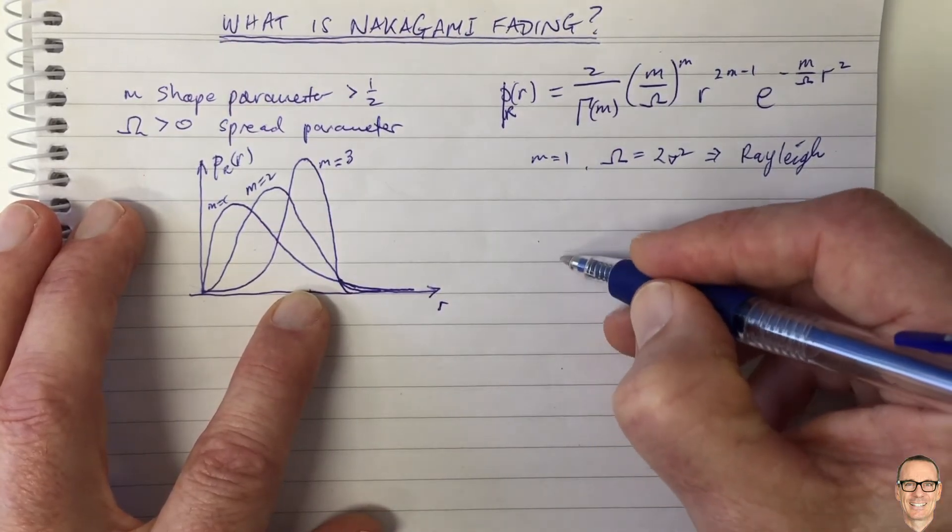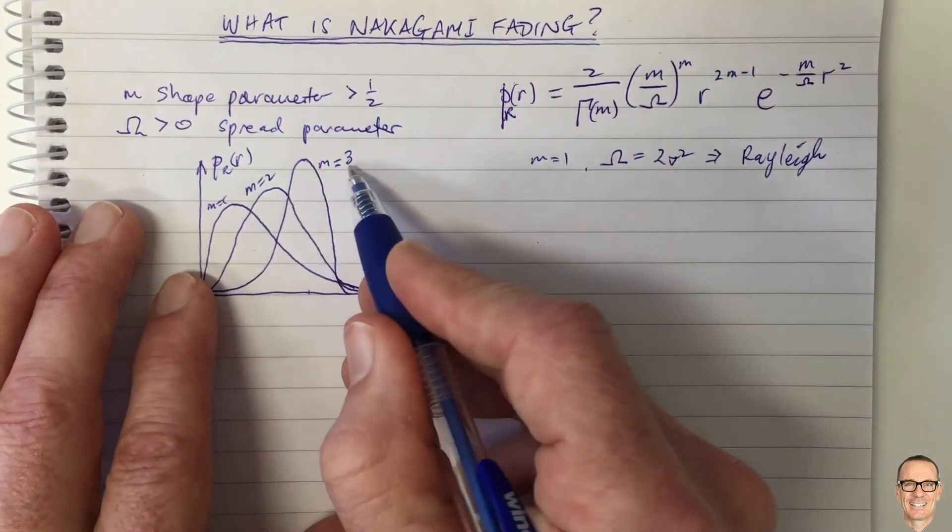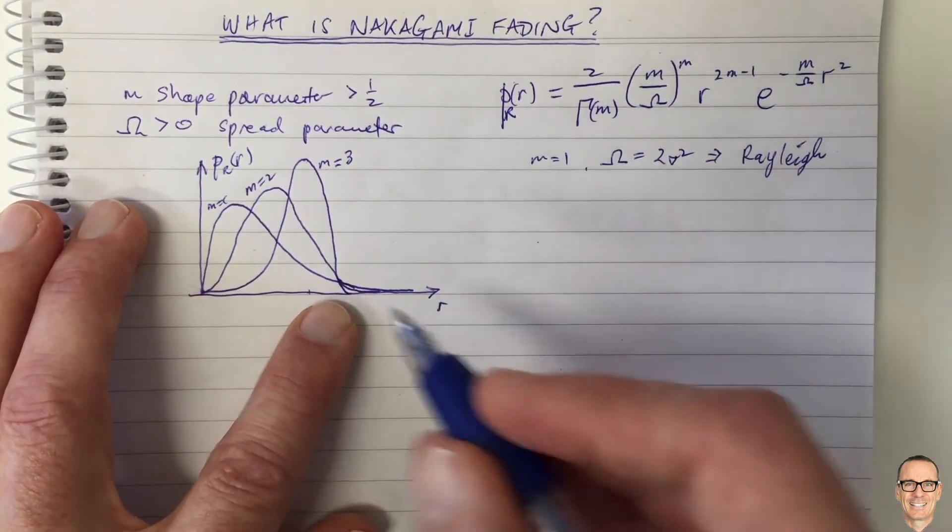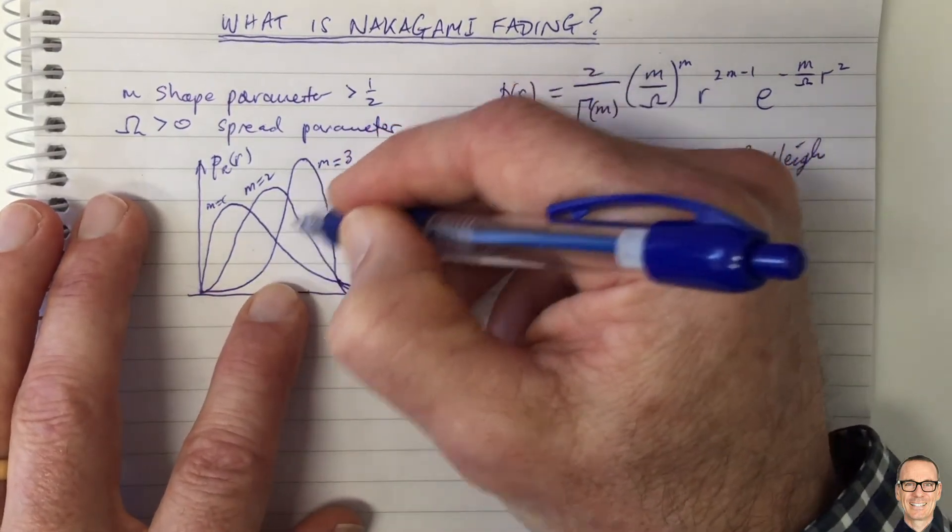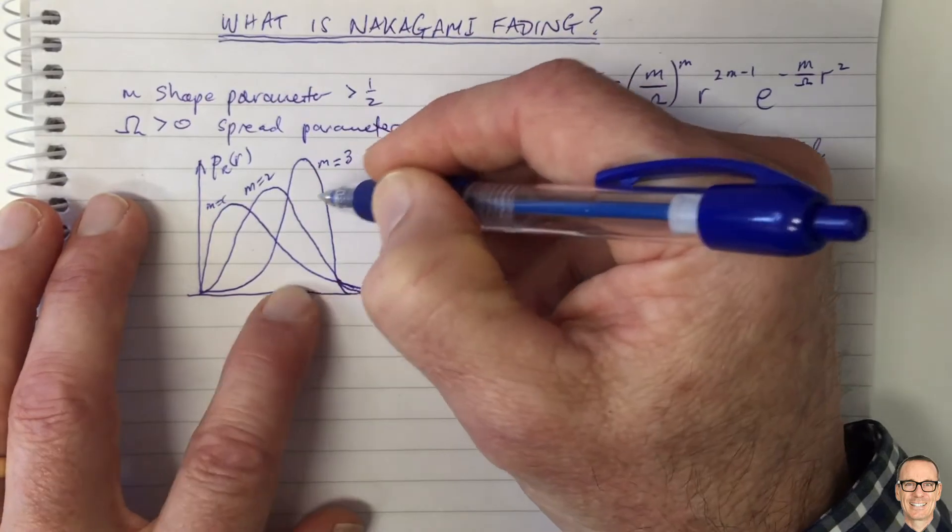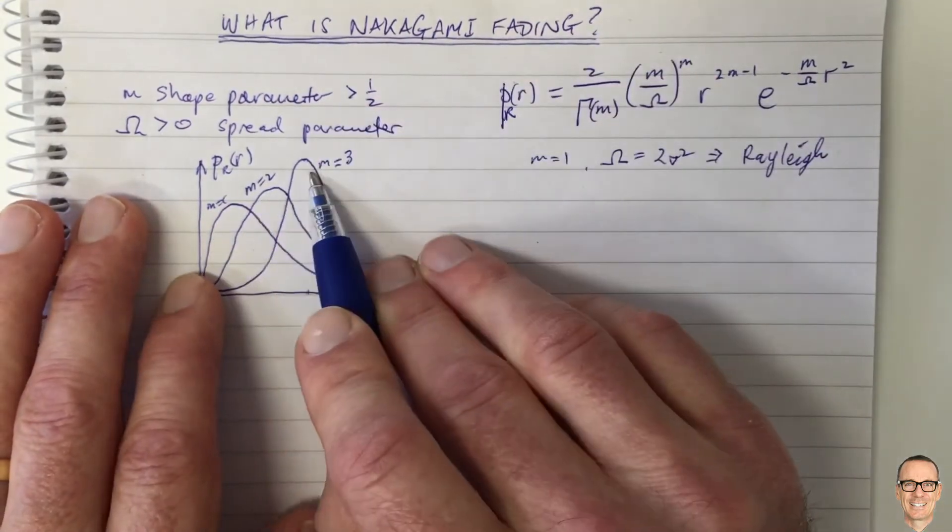I'm just going to sketch the Ricean here for a comparison. This is what happens as M gets bigger for the Nakagami. This is just my sketching, I haven't sketched the M equals 3 particularly well, you can look up and find better pictures, but this is the relative shapes of those.